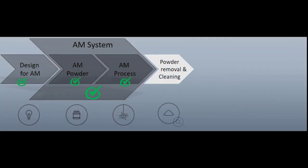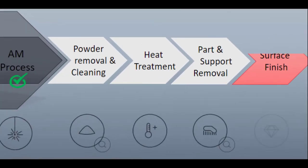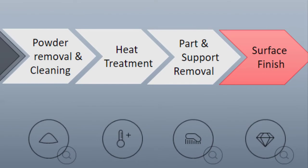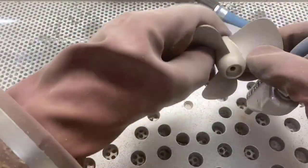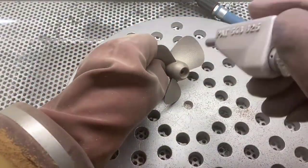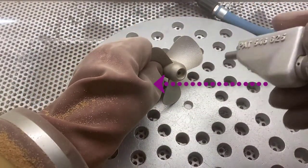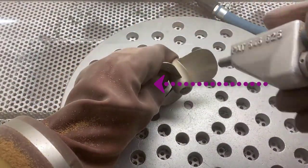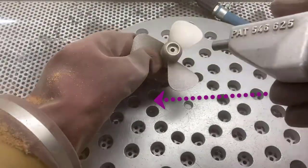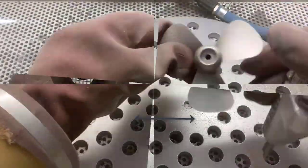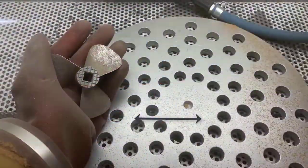Within the context of post-processing, surface finishing is a crucial downstream process. Here we apply blasting, among other methods. When blasting manually, it is necessary to blast from different directions and angles, as well as to keep a distance of 30 to 50 millimeters to the part's surface.